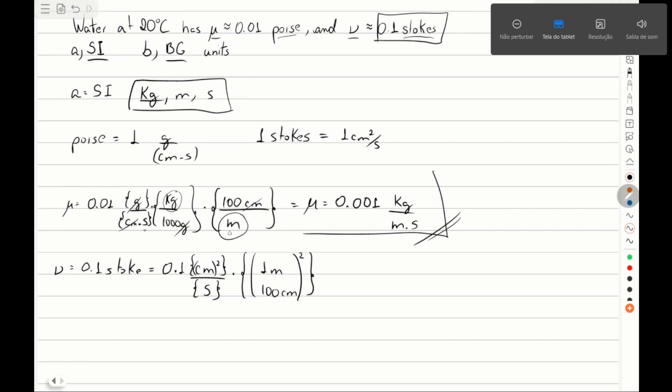Now we have centimeters squared, right? Let's make another step here. 0.1 centimeter squared per second multiplied by meter squared.